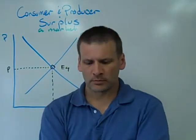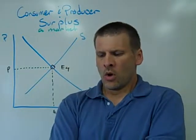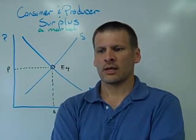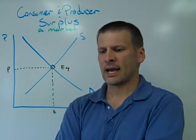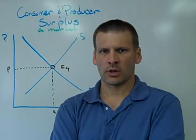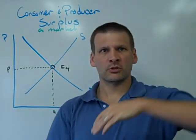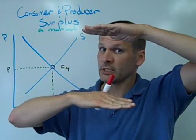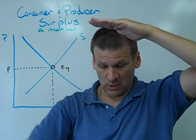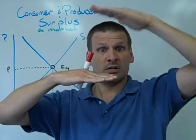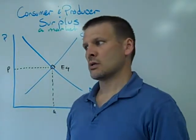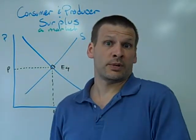A couple of definitions first. Consumer surplus is defined as the additional utility that a consumer has derived as a result of paying a lower price at the market than he or she was prepared to pay. I was prepared to pay X; instead I paid Y, which was lower than I expected, and I derived an additional bit of utility as a result of that purchase. That's consumer surplus — the additional utility derived from making a purchase at a lower price than anticipated.